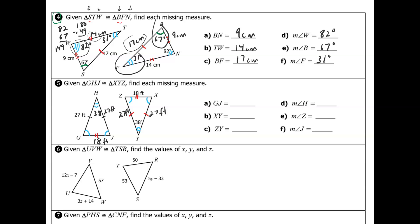The missing angles are those four base angles. Using the triangle angle sum: 180 minus 38 equals 142, and the base angles are each half of 142, which is 71 degrees. So each of those four angles — G, J, Z, and X — is 71 degrees.